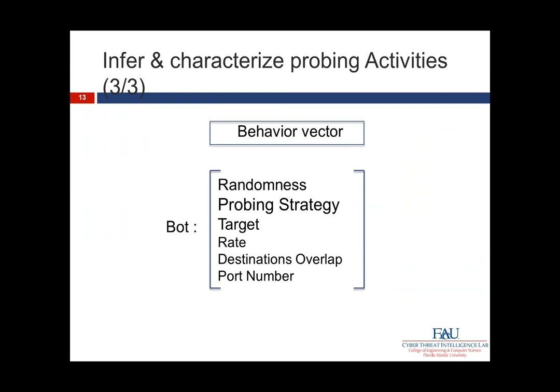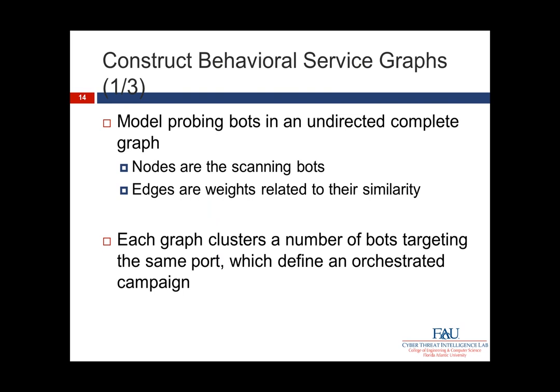We create a vector for each piece of information — inferring what a predator bot is by looking at randomness, probing strategy, target, rate, destination overlap metric, and port numbers being scanned. Once we have that vector for each identified bot, we can create a behavioural service graph. The nodes in the graph are the actual bots — the scanning nodes — and the edges are weights related to their behavioural similarity. Each graph then clusters bots targeting the same port, defining an orchestrated campaign like the SIP scan shown in the video.